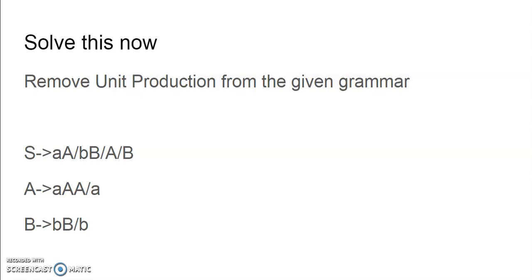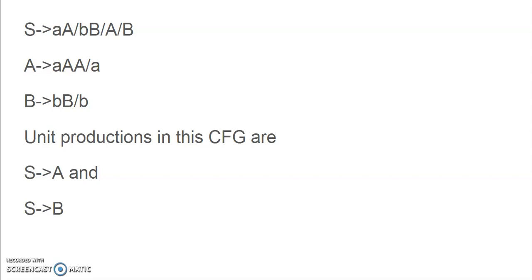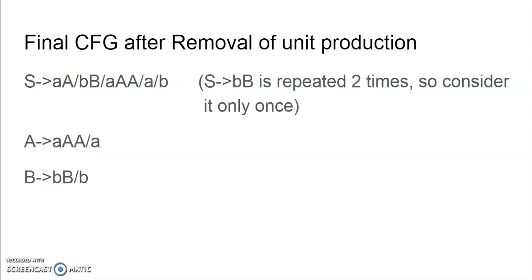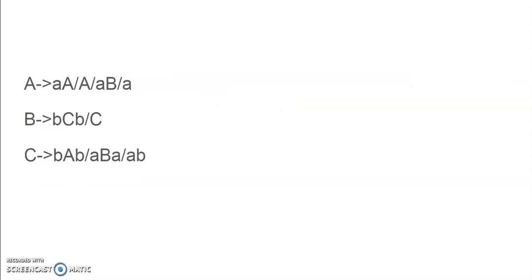Now solve this: remove unit production from the given grammar. Pause the video, solve it, and then come back. In this example, the unit productions are S produces A and S produces B. As done in the previous example, in place of A we put the production of A, and in place of B we put the production of B. Substituting the productions of A and B, the final answer is S produces aa or bb or aaa or a or b. Since S produces b was repeating, we consider it only once.